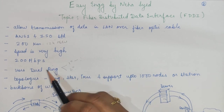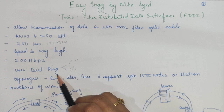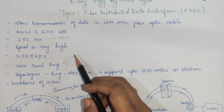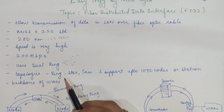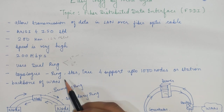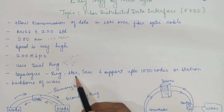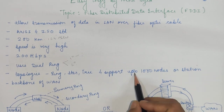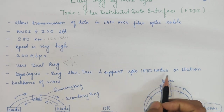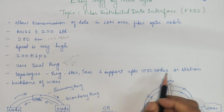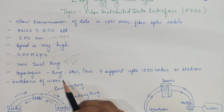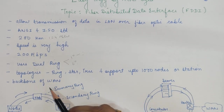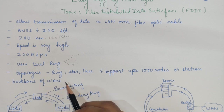So this is the dual ring strategy used in FDDI. Different topologies are supported: ring, star, and tree. It also supports up to 1000 nodes or stations. Because of this, FDDI has become the backbone of wide area networks.